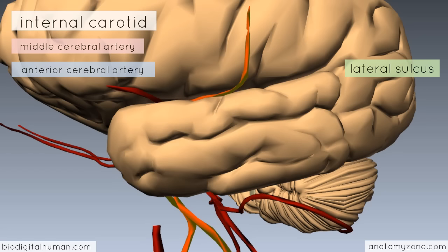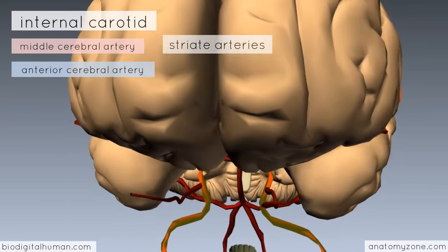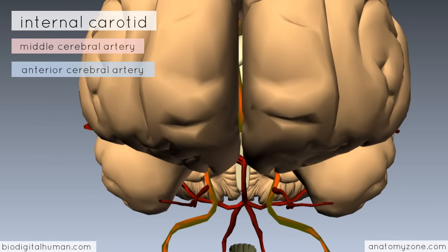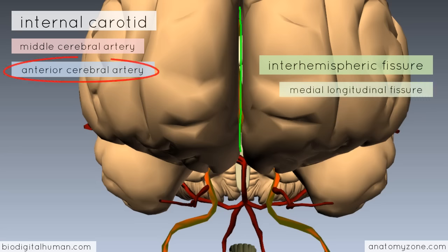Within this fissure, the middle cerebral artery gives off some small branches to supply the basal ganglia, called the striate arteries. Rotating the model anteriorly, you can see the interhemispheric fissure — also called the medial longitudinal fissure — running down between each hemisphere. The anterior cerebral artery runs in this fissure.